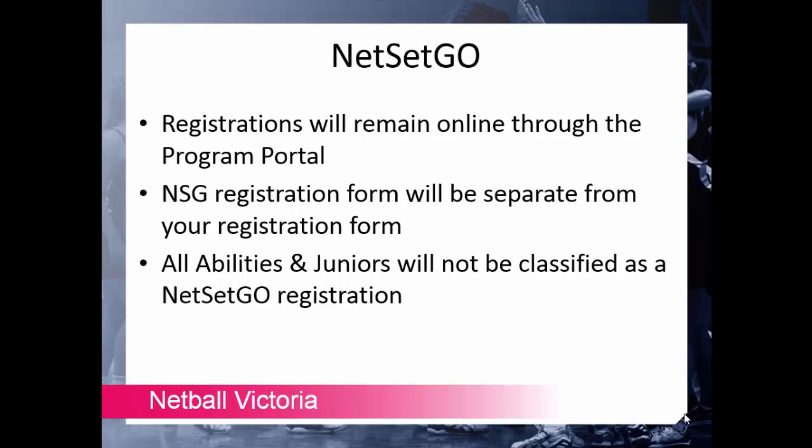Netset Go registrations for 2016 will remain the same as they were in 2015, through the program portal on MyNetball. All Netset Go registrations must be completed online through the Netset Go website or manually in the enrolment manager. Please note that the form will be separate to your registration forms — due to the way Netset Go is set up in MyNetball with the program portal, it is not possible to merge the two forms together. Please also remind your members that an All Abilities or Junior registration is not a Netset Go registration. If a member accidentally registers as All Abilities or Junior, they will not receive a PAC — they must be registered as a Netset Go participant.